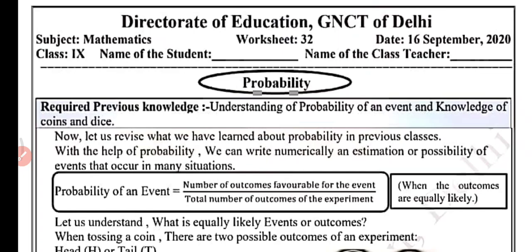Jab hum coin ko toss karte hain, toh humaare paas outcome kya kya hote hain. Jab bhi hum coin ko toss karte hain, toh hume outcome kya milta hai — either head or tail. When we toss two coins simultaneously, these are the outcomes when two coins are tossed simultaneously.